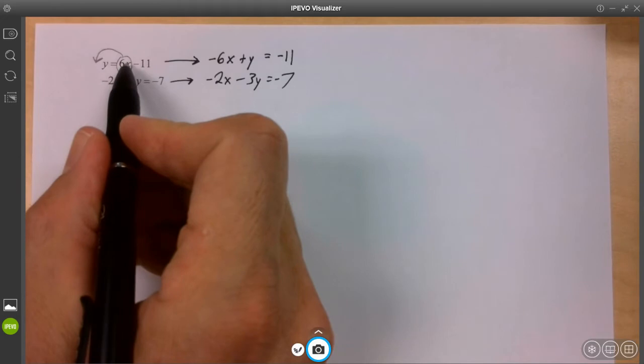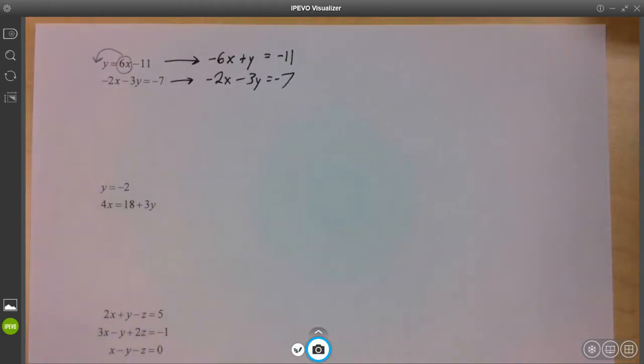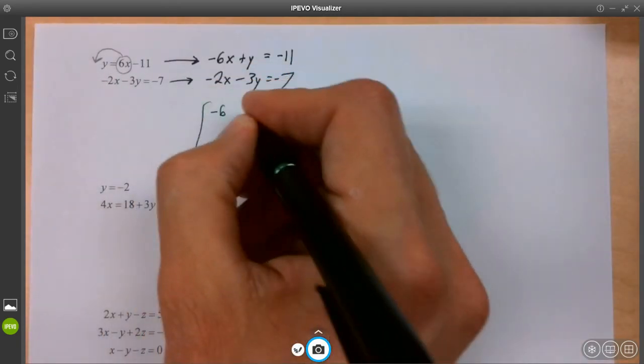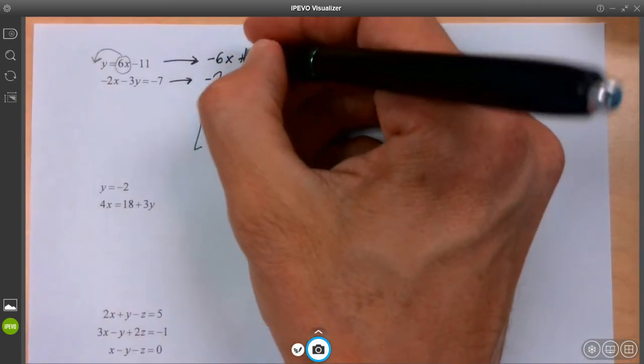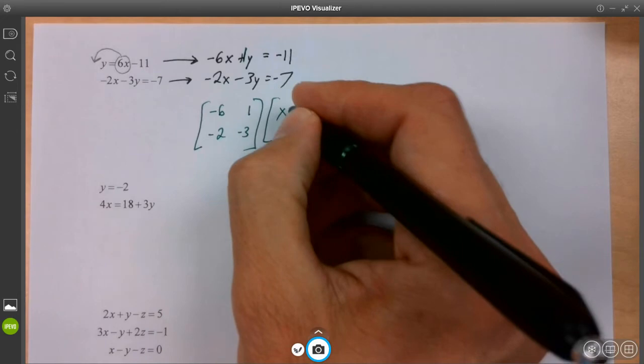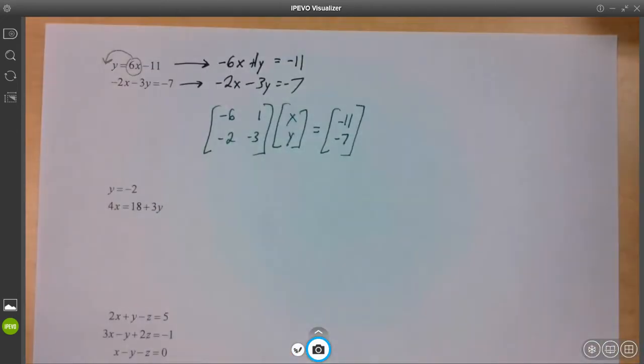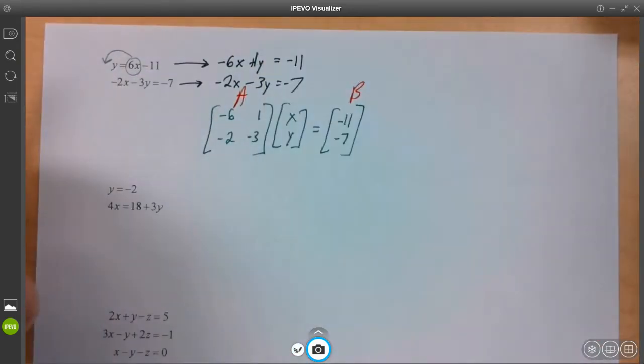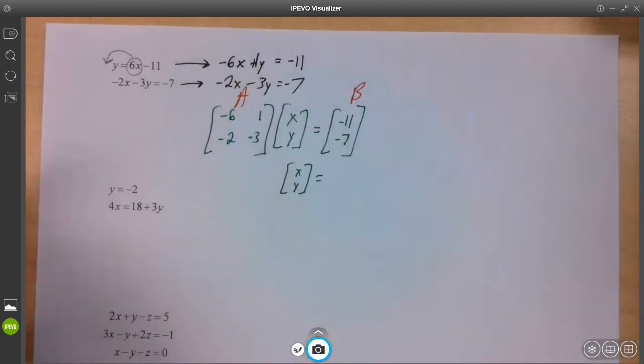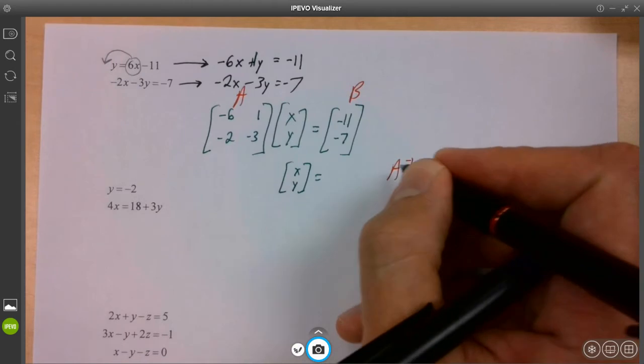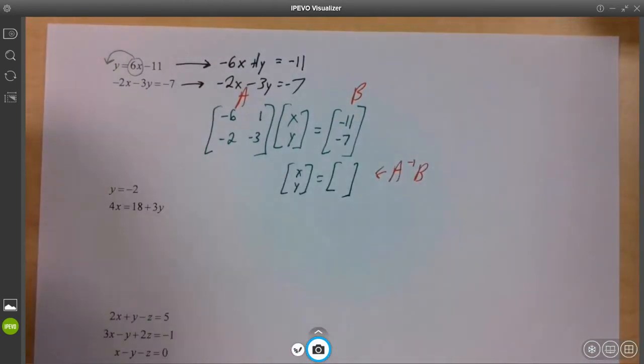The X was in the wrong place. It needs to move to the other side of the equal sign and it needs to be in the front. So let's go green. Negative six, one, negative two, negative three. I would like to think it's obvious where these numbers come from. X and Y here. And that's equal to negative eleven, negative seven. We have A, we have B.